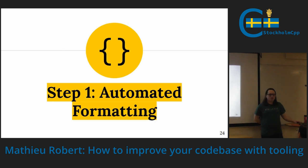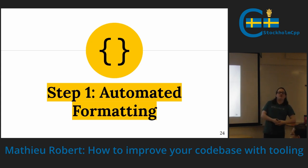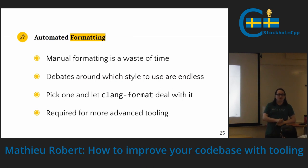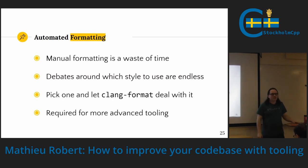Step one: automated formatting. Who here likes to argue about formatting? We're programmers — we like to argue way too much. Either you care way too much or you don't care at all, and in both cases it's going to be terrible. Manual formatting is a waste of time, and the only thing worse is debating formatting. I've been in three code standard initiatives that failed because people started arguing tabs versus spaces versus braces on the next line. I don't care, as long as Clang-format can format it. Just give me the Clang-format file and I'll do whatever I have to — put a plugin in my IDE or a git commit hook and it will just do it.